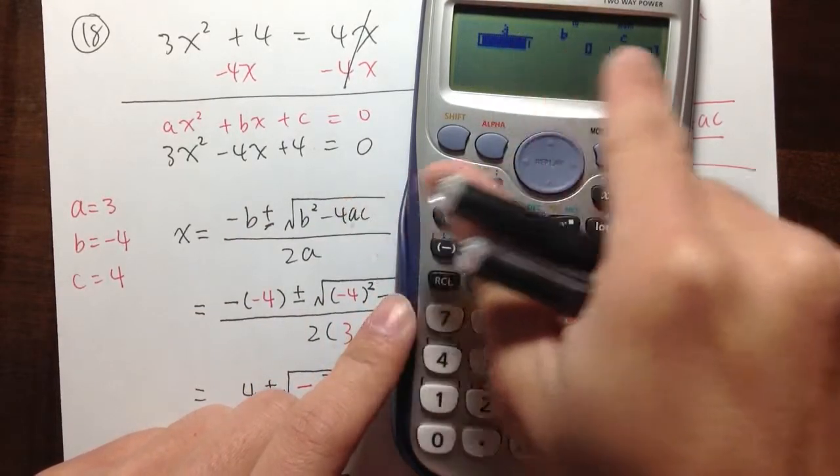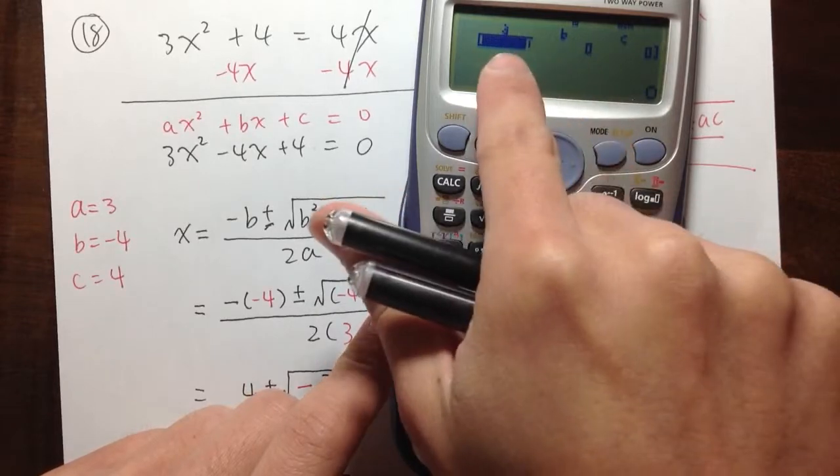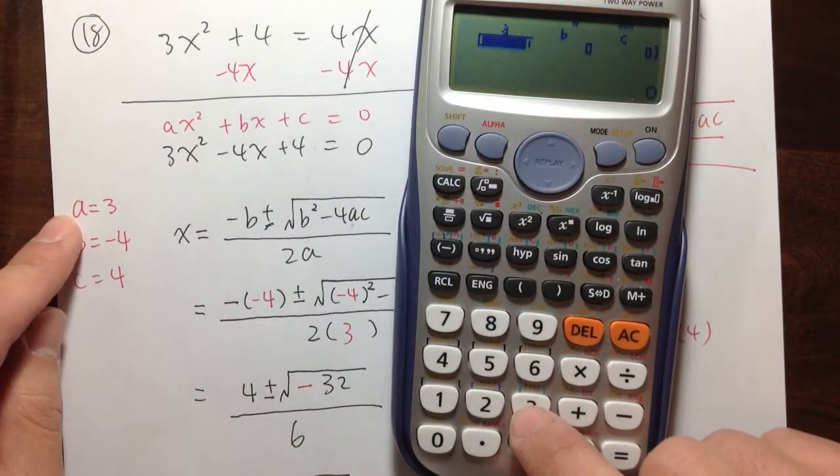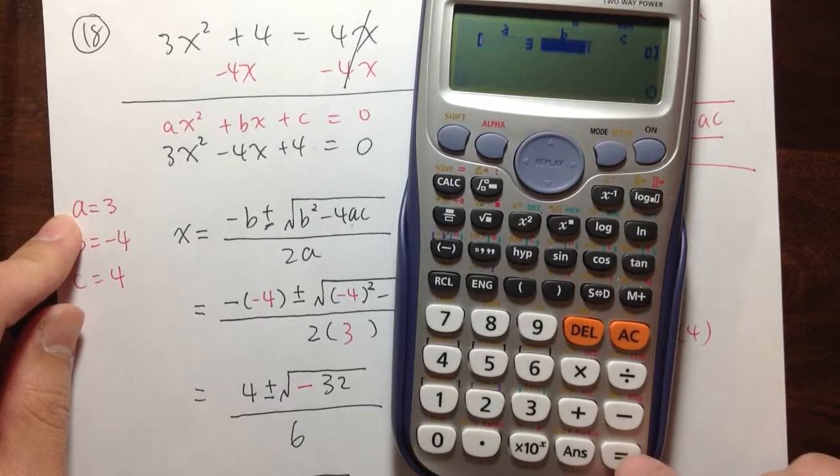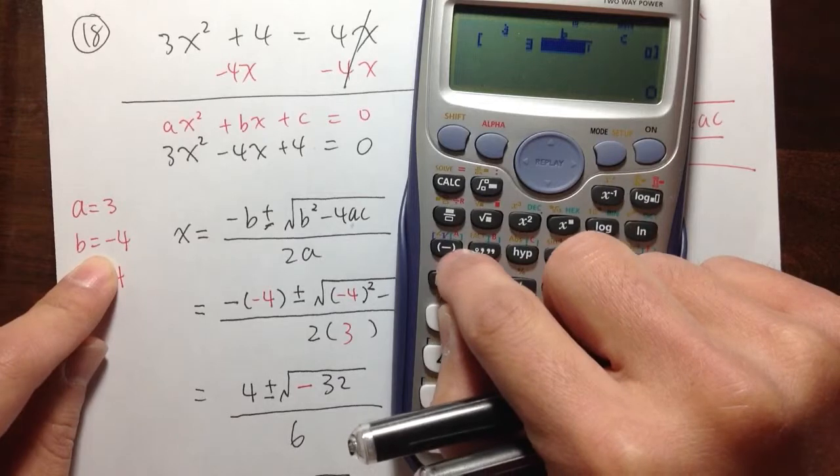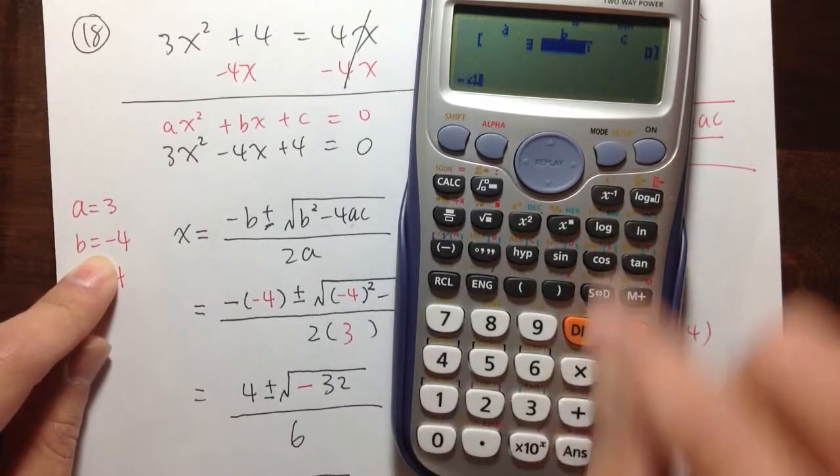And then we have 3 places that allow us to enter the value of a, b, and c. So a is equal to 3. So press 3 and equal. And b is negative 4. So use negative 4 for b.